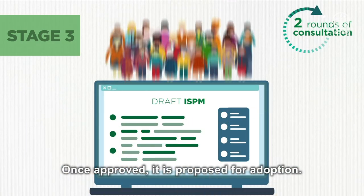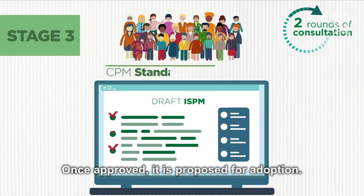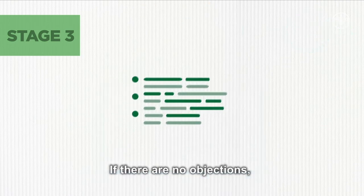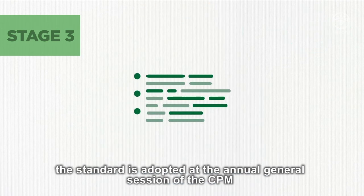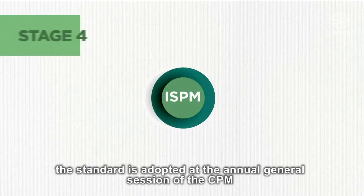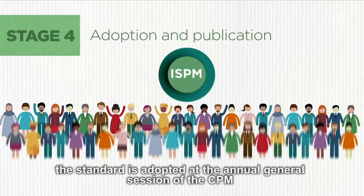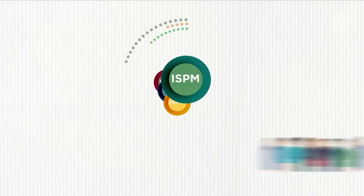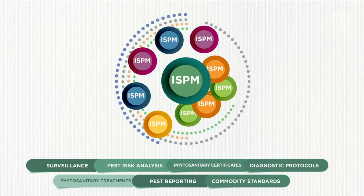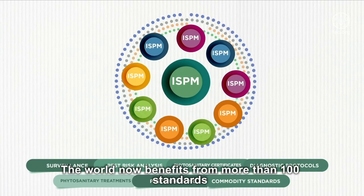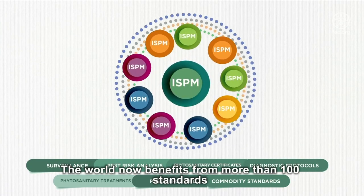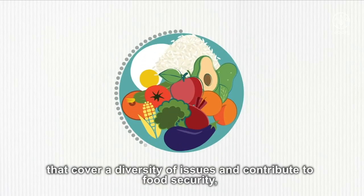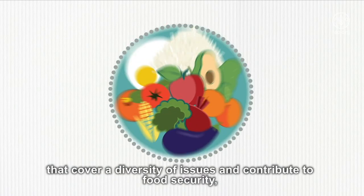Once approved, it is proposed for adoption. If there are no objections, the standard is adopted at the annual general session of the CPM by the plant health community. The world now benefits from more than 100 standards that cover a diversity of issues and contribute to food security, protection of the environment and safe trade.